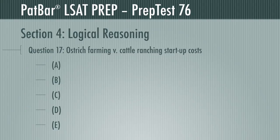Question 17 presents a set of facts comparing ostrich farming and cattle ranching. We're told that ostriches reproduce much faster and require far less acreage, and that a cattle ranch requires a large herd of cows, one bull, and a minimum two acres per cow. The conclusion is that starting an ostrich farm costs more but eventually can bring five times the income. Which answer is most strongly supported by that data?